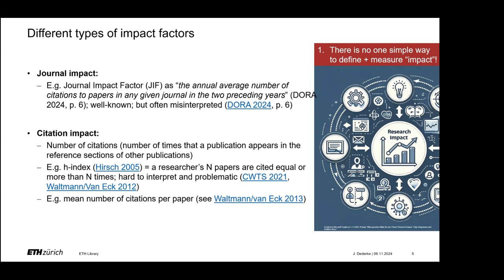Another type of impact factor are citation impact factors, which refer to the number of citations — meaning the number of times a publication appears in the reference sections of other publications. Also well-known is the H-index, introduced by Hirsch in 2005, which is calculated as a researcher's N number of papers that are cited equal to or more than N times. While widely used, it is often very hard to interpret and has various problems, which I'll focus on later on.